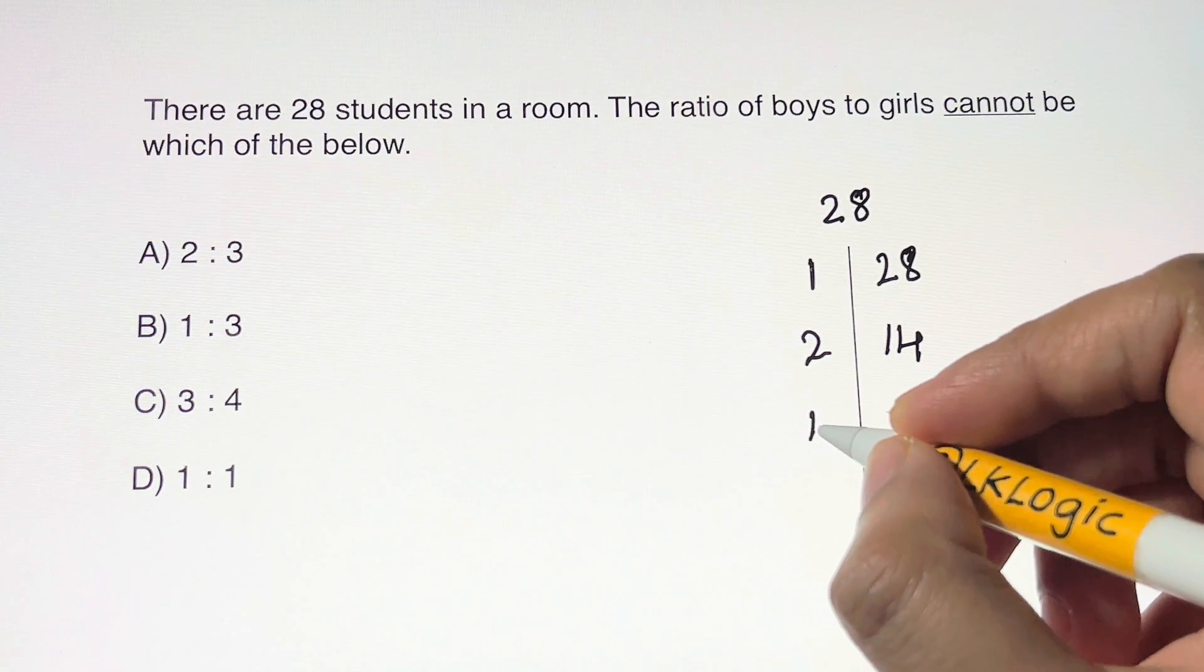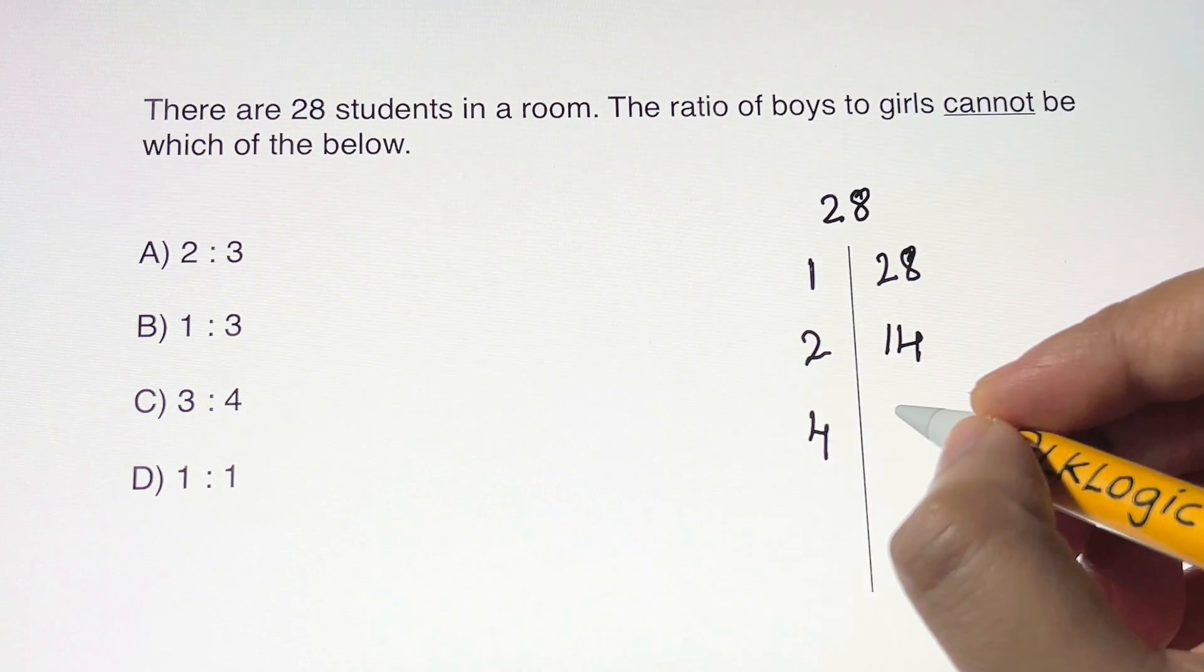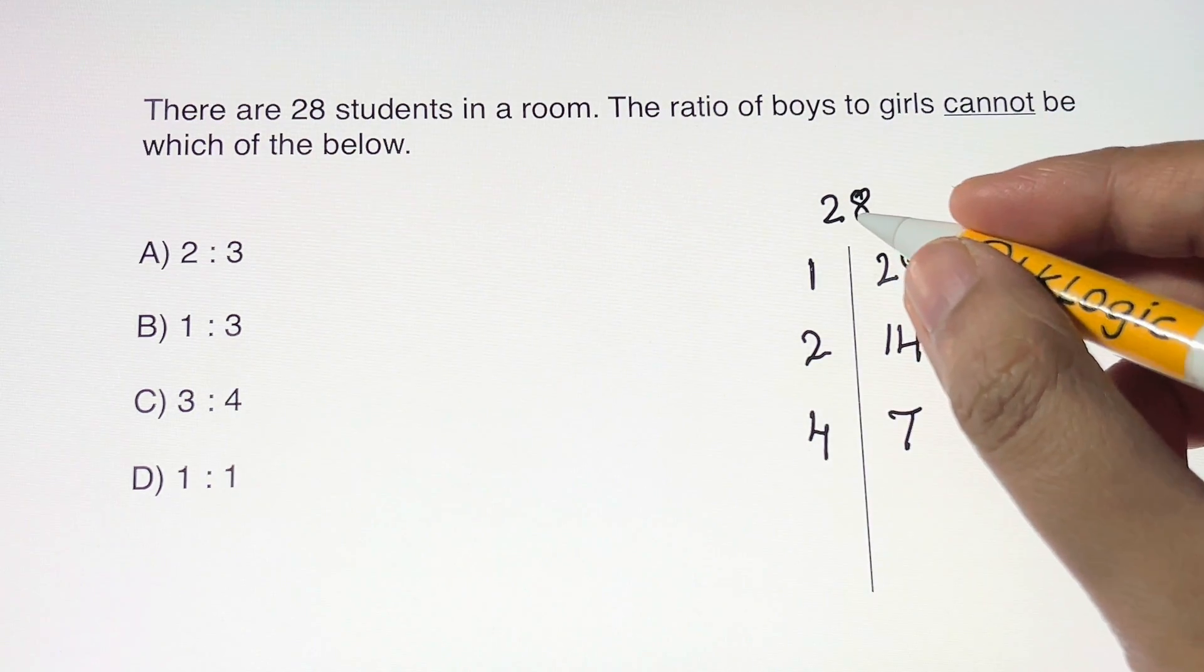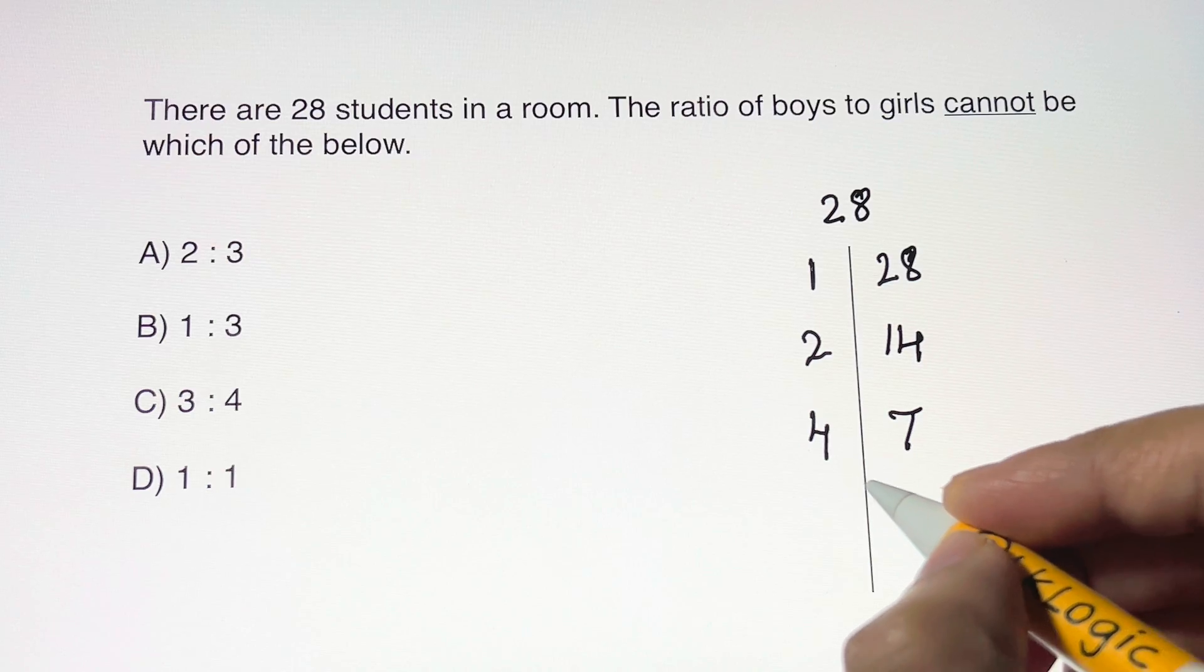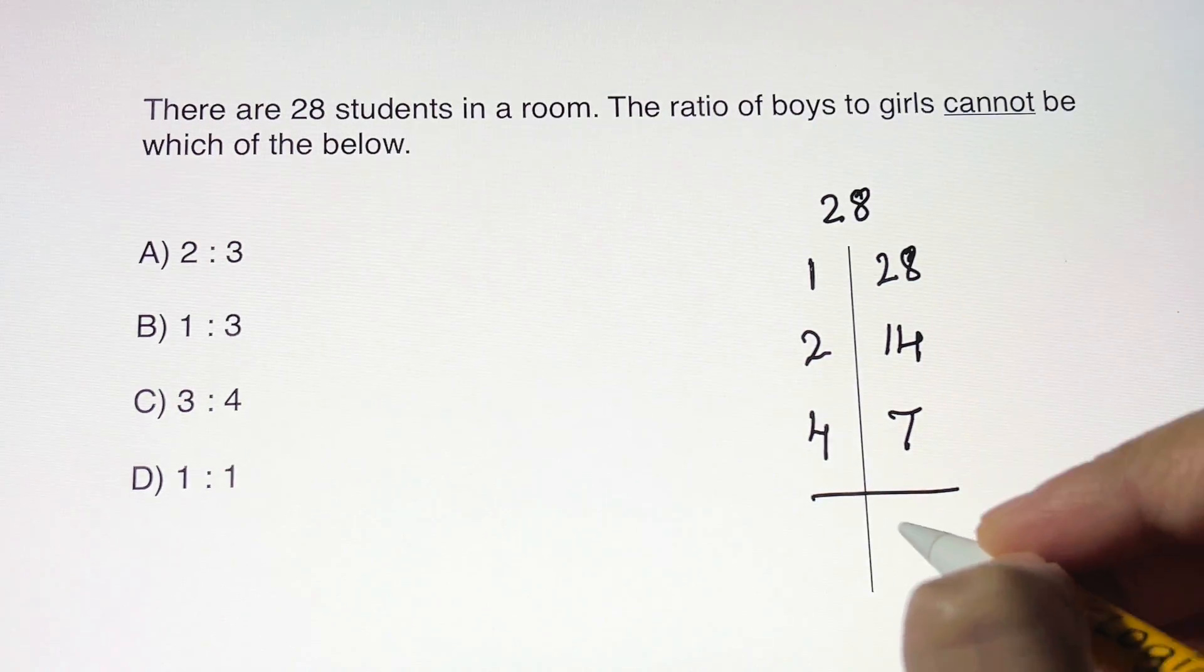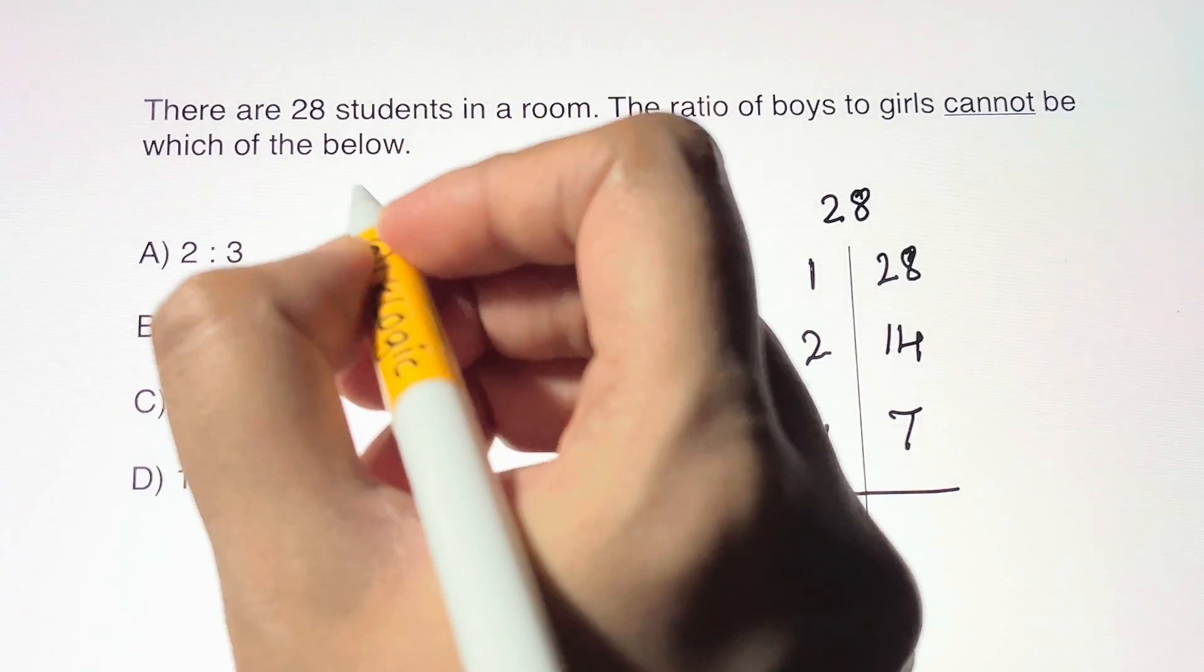It doesn't go with 3, so we have 4 next. 4 times 7 is 28. It doesn't go with 5 and 6, so we end up here. We have all the factors of 28 now.